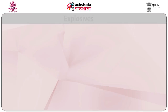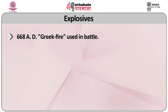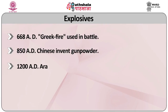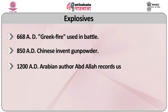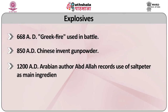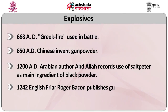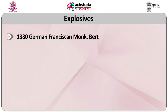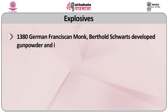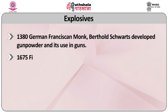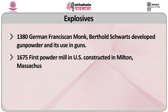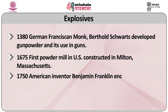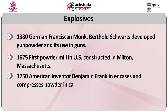History of explosives. In 668 AD, Greek fire was used in battle. In 850 AD, Chinese invented gunpowder. In 1200 AD, Arabian author Abd Allah recorded use of saltpeter as the main ingredient of black powder. In 1242 AD, English friar Roger Bacon published the gunpowder formula. In 1380 AD, German Franciscan monk Berthold Schwarz developed gunpowder for use in guns. In 1675 AD, the first powder mill in the USA was constructed in Milton, Massachusetts. In 1750, American inventor Benjamin Franklin encased and compressed powder in cartridges.